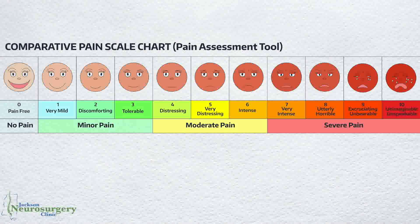The 0 to 10 pain scale can be either a visual scale or simply a numeric scale. The visual scale uses a photo or standardized measurement, such as a 10 centimeter strip, to help the patient choose where on the scale their pain lies. The numeric rating scale simply uses a 0 to 10 number range, with 0 indicating no pain and 10 indicating the worst pain imaginable.